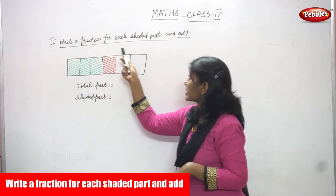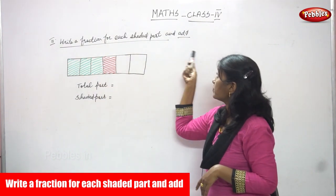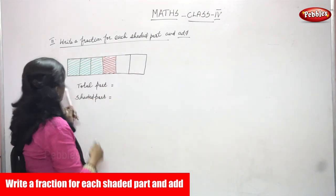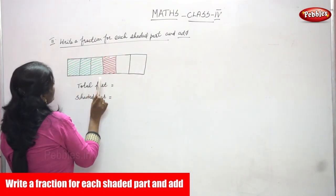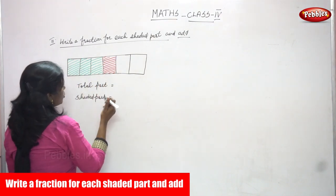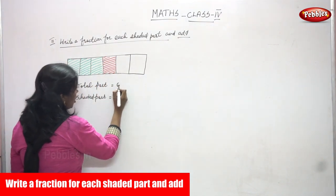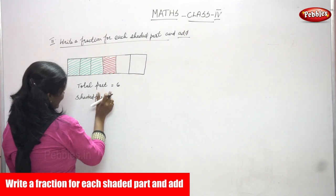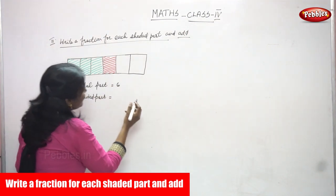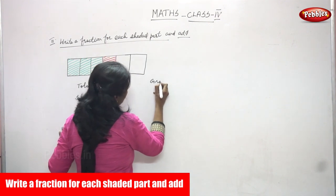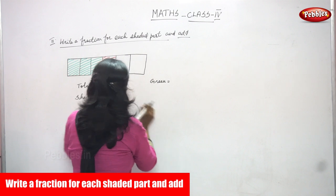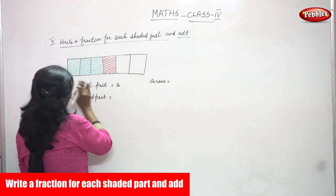Now we are going to write a fraction for each shaded part and add. Look at this rectangle — how many parts? One, two, three, four, five, six. So the total number of parts is six. The shaded parts: one, two, three — in green color.